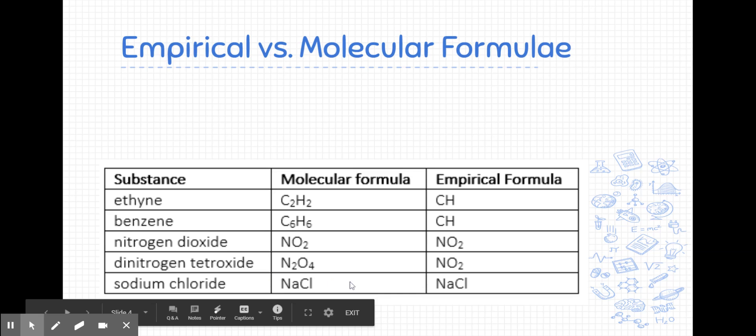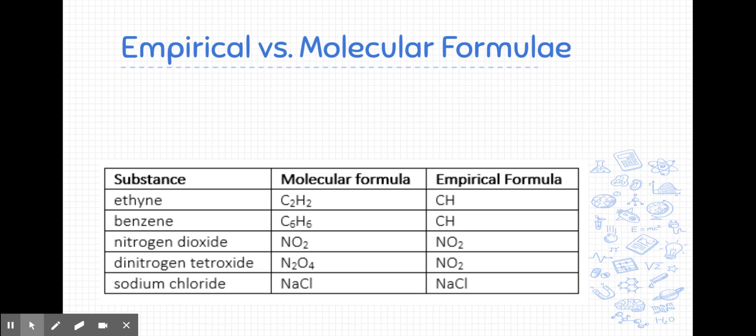For ionic compounds, an ionic compound is always expressed as its empirical formula, because an ionic compound is simply a ratio of ions, and we always express that in its simplest whole number ratio. Our next video will look at determining the molecular formula, but we want to first start off with finding the empirical or simplest formula.